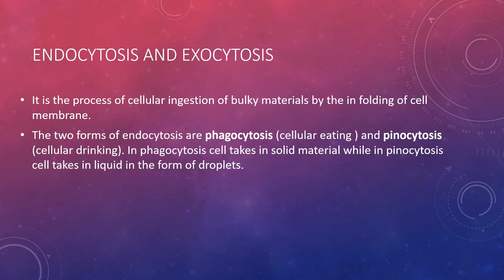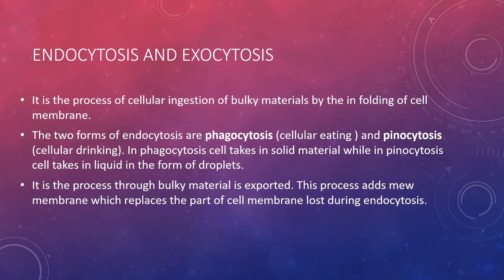Now let's study exocytosis. The name itself tells us that something is being taken out from the cell. Endocytosis takes material into the cell, while exocytosis is the opposite — it takes material out of the cell. Exocytosis is the process through which bulky material, meaning large molecules, is exported from the cell. This may include waste from the cell that is exported.